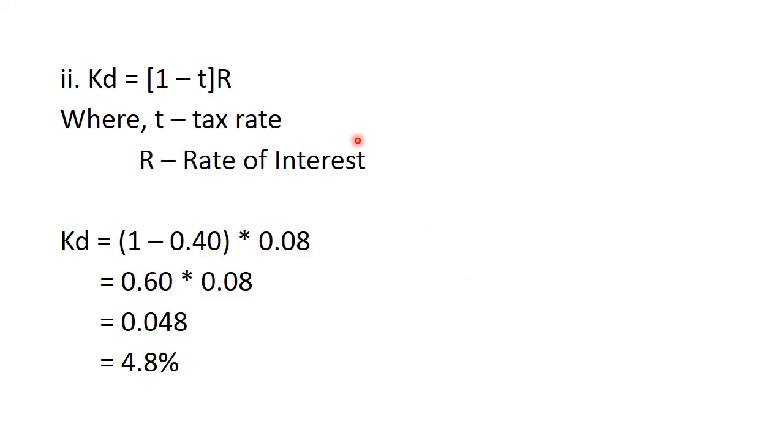Now, cost of debt, that is the cost of debentures. Like we said, the formula is very simple: 1 minus T. These are perpetual bonds because it is perpetual. There is no maturity period and nothing is mentioned about the par value or redemption value or net proceeds. So we are going to use a simple formula 1 minus T into R.